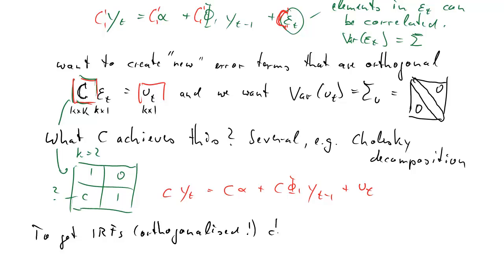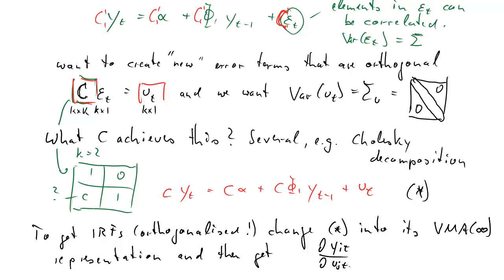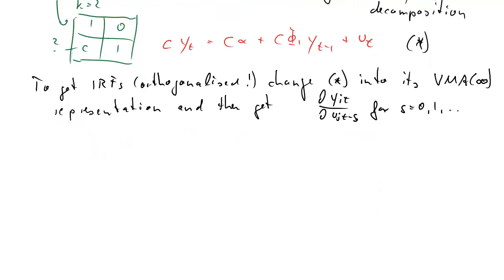To get impulse response functions using this representation means we need to transform our vector AR, here represented in the asterisk equation, to its vector moving average representation. And then in that vector moving average we can easily read off the partial derivative of y_it with respect to an error term j at times t minus s for s equals 0, 1, 2 and so forth. Just as before. But now with respect to the u's. And these u's are now orthogonal. So now it makes sense to say 1 u is 1 and all other u's are equal to 0, because we've transformed to u's which are orthogonal and uncorrelated.